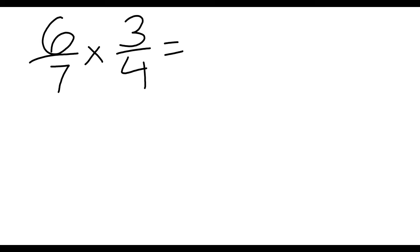Multiplying with fractions is extremely simple. You simply multiply straight across the top, straight across the bottom. So 6 times 3 is 18, and 7 times 4 is 28.